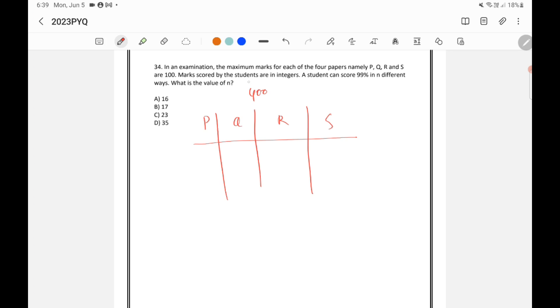Marks scored by the students are in integers. A student can score 99% in N different ways. So 99% means 99% of total mark, that is 400.